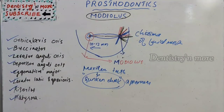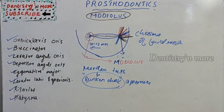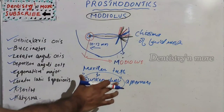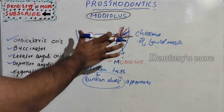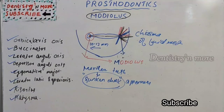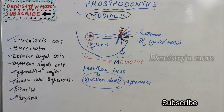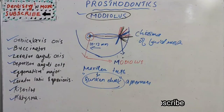The importance of the modiolus in denture fabrication is that the denture base should not interfere with its function — if it interferes, retention will be hampered. Maxillary teeth normally support the modiolus; if absent, it gives rise to a sunken cheek appearance. So that's the simple concept of the chiasma of muscles, that is the modiolus. Hope you understood this small topic — I will come back with another topic in prosthodontics. Thank you.